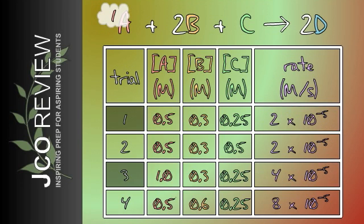Now look at trials 1 and 4. While the concentrations of A and C remain constant, B doubles, and the reaction rate quadruples. This quadrupling indicates that B is a second-order reactant.